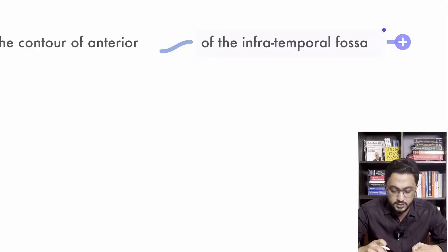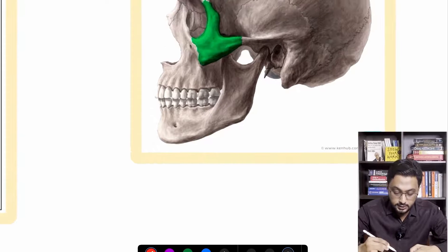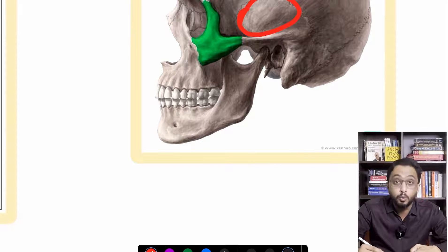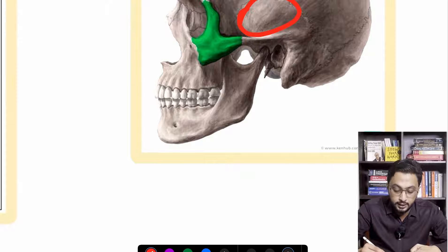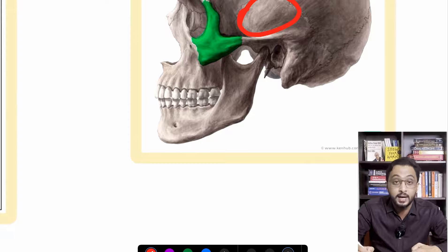If you come to the same image once again, this is basically the temporal bone. Below that, in this area, behind this green one, if you just remove that Zygomatic arch,